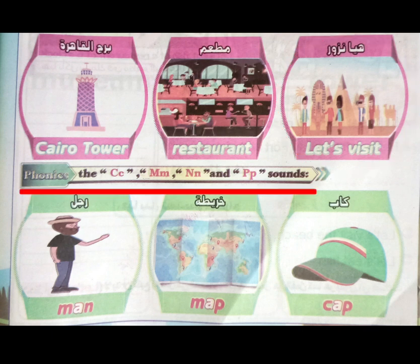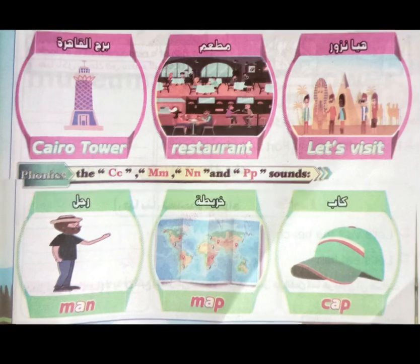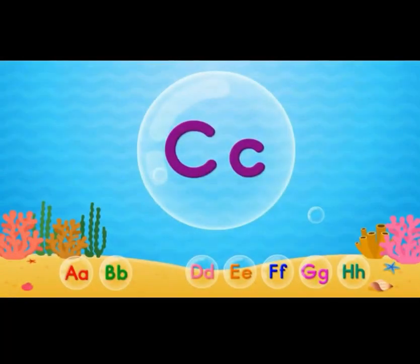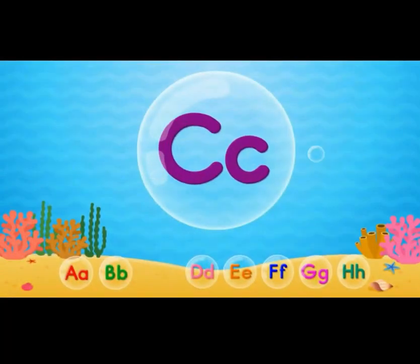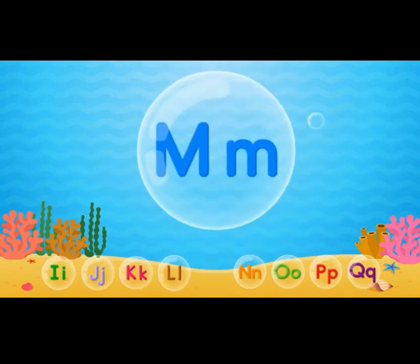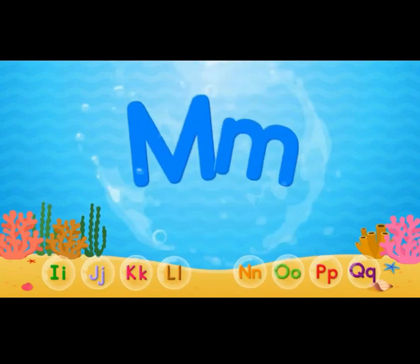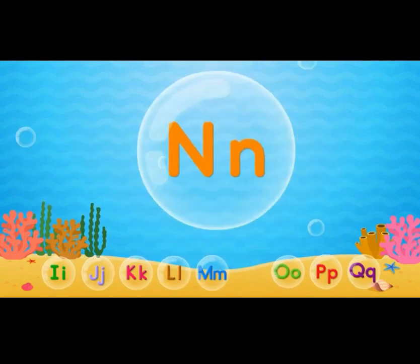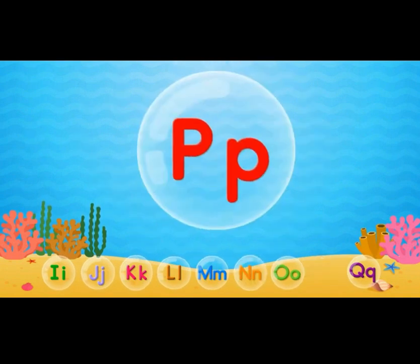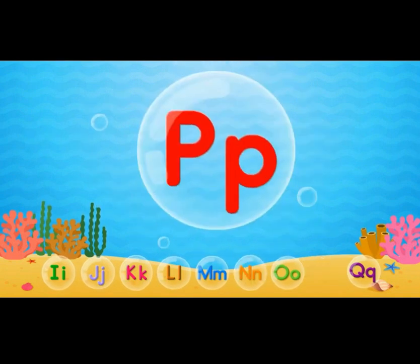Phonics: the C, M, N, and P sounds. C says k. M says m. N says n. P says p.